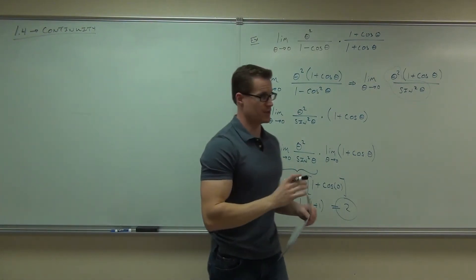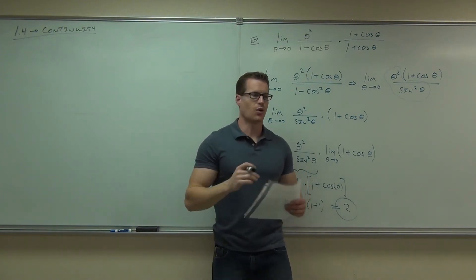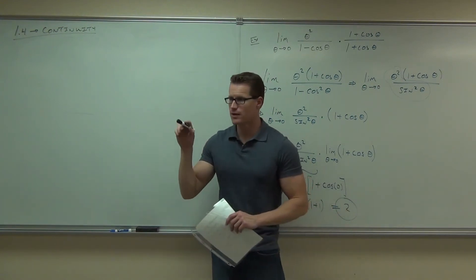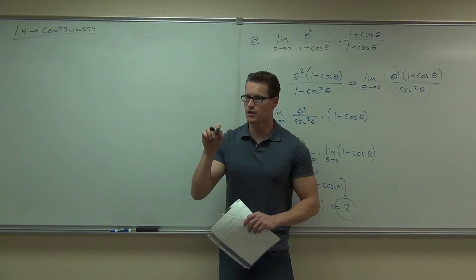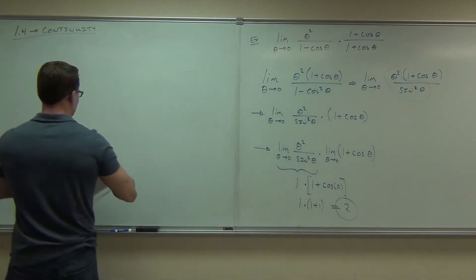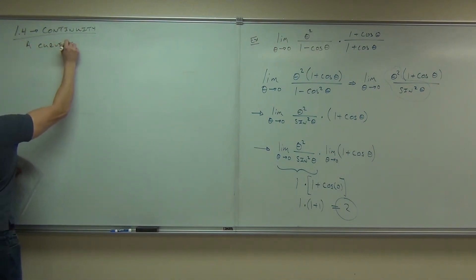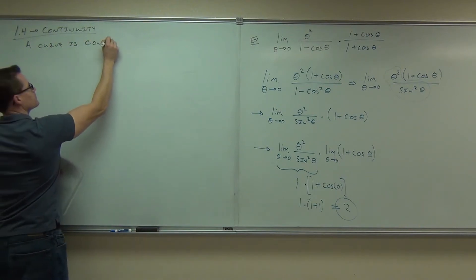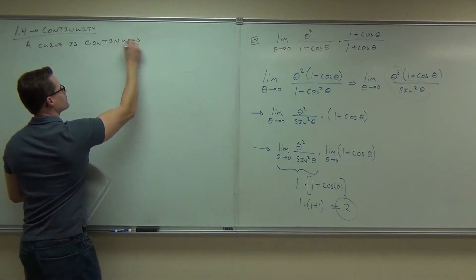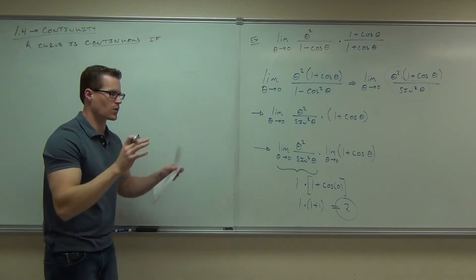Here's the layman's term definition of continuity: a function is continuous if it has no holes, breaks, or asymptotes. That's pretty much it. If you can graph it without picking your pencil off the paper, you would say it's continuous. So continuity means a function is continuous if it doesn't have any holes, breaks, or asymptotes.